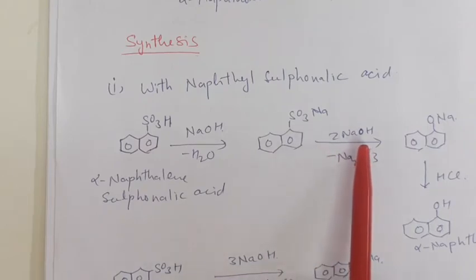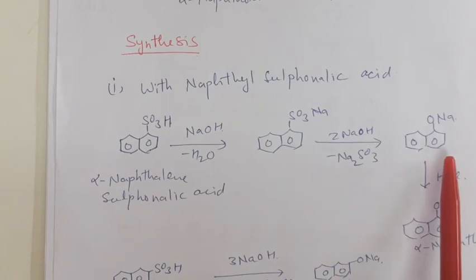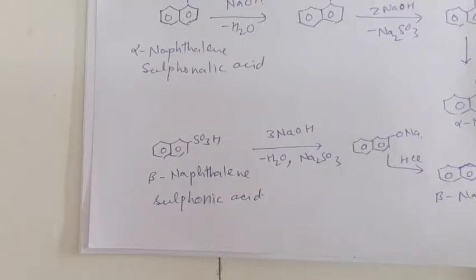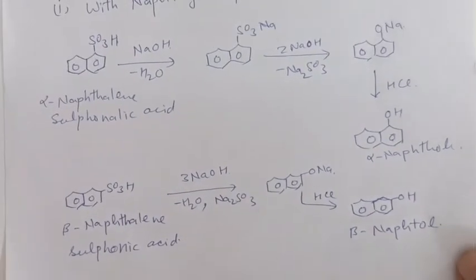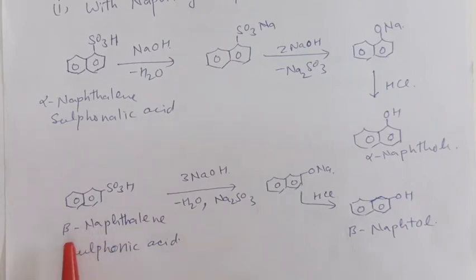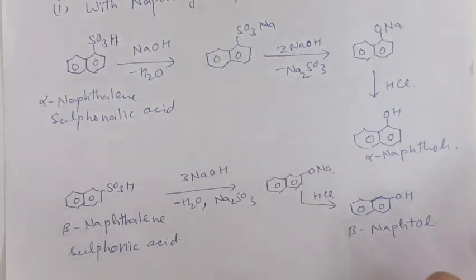This reacts again with two molecules of NaOH, eliminates sodium bisulfite, and gives the sodium naphthoxide ion. This reacts with HCl, eliminates NaCl, and gives alpha naphthol. Similarly, if we take beta naphthalene sulfonic acid, which can be obtained by reacting naphthalene with sulfuric acid at 150 degree centigrade, then we get the beta naphthol.